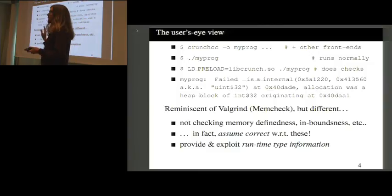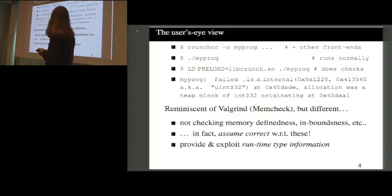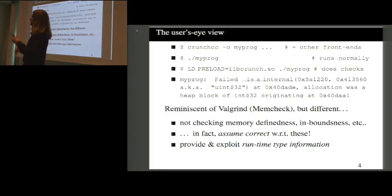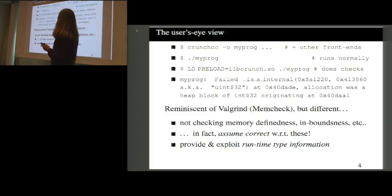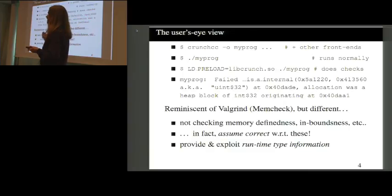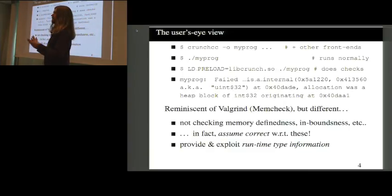This is reminiscent of a tool like Valgrind — or more precisely, MemCheck, the Valgrind tool most people use. But it's checking completely different properties. Valgrind doesn't know anything about runtime types because it runs only on binaries. This tool deliberately does not check things that existing tools check, like spatial or temporal memory correctness. It assumes you have other tools for those, and instead checks exactly the things that benefit from runtime type information — namely, pointer casts.